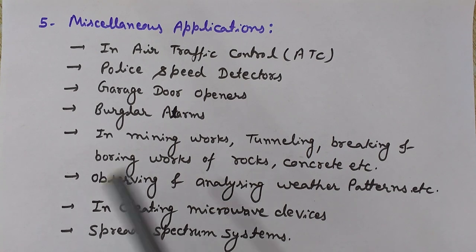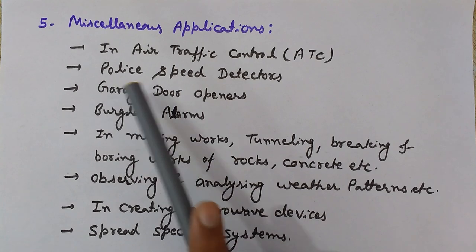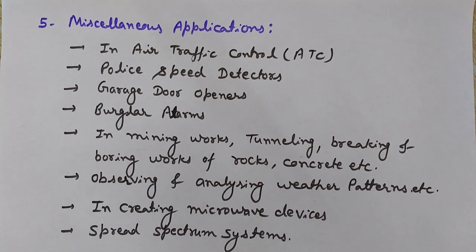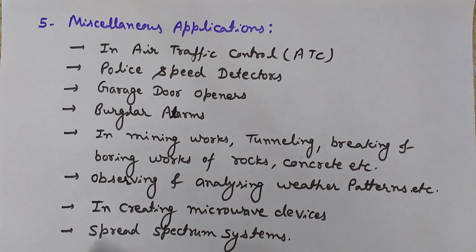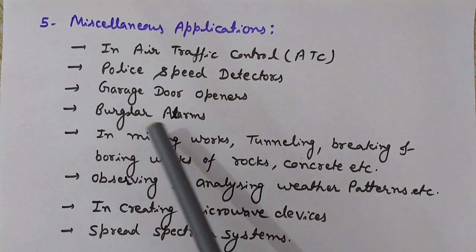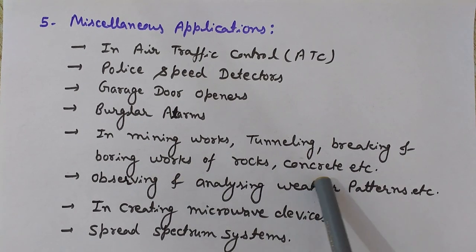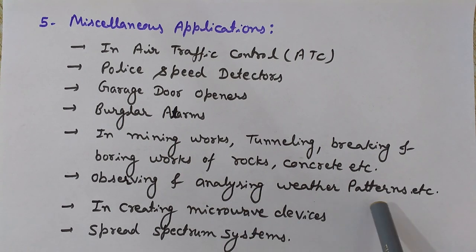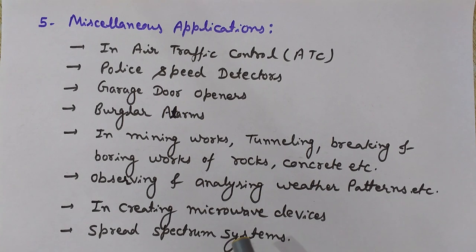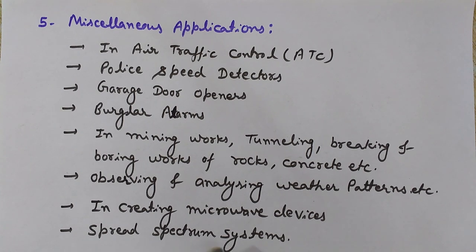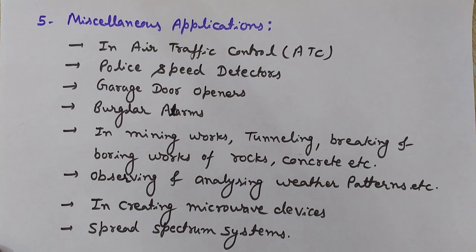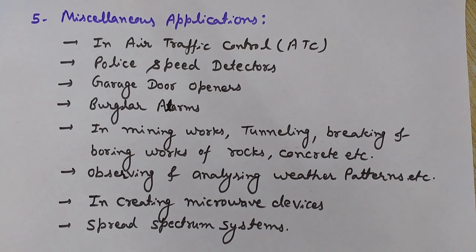Now for some miscellaneous applications: microwaves are used in air traffic control (ATC), in police speed detectors for detecting the speed of moving vehicles, in garage door openers, burglar alarms, mining and tunneling works, and for observing and analyzing weather patterns for forecasting. They are also used in creating various microwave devices and in spread spectrum systems.